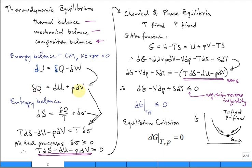We rearrange so dQ equals this, then go to the second law entropy balance: dS equals δQ over T plus δΣ for a closed system. Then combine these two to eliminate δQ, the differential heat transfer, and get a relationship where properties and changes in properties on the left-hand side equal temperature times the entropy generation term. All real processes have entropy production greater than or equal to zero, so T·dS minus dU minus P·dV must be greater than or equal to zero for all real processes for a closed system neglecting changes in kinetic and potential energy. The system can have heat transfer and work transfer characterized by boundary work.